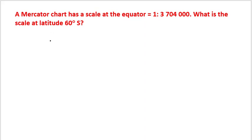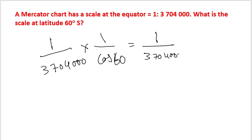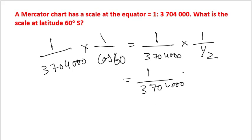Another way to solve the problem by direct application of the formula would be: scale at latitude = 1/(3,704,000) multiplied by 1/cos(lat). So 1/cos 60 equals 1 divided by one-half, which equals 2.